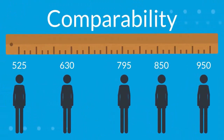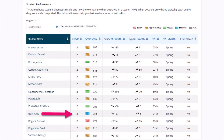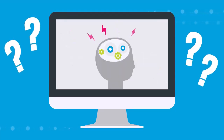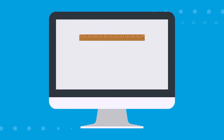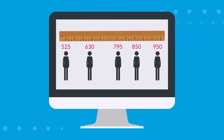Another huge benefit of using scale scores is comparability. Let's compare that student's score to the whole class or grade level. When we look at all students' scores in this class, we see that Amy scored a 755 on her spring math assessment, but most of her peers scored in the low 600s and 700s. That means that Amy is more advanced in math compared to her peers. Now you understand the power of scale scores — by taking into account the difficulty of the questions a student answered, scale scores allow educators to measure growth and to compare students to one another, even students in different grades, by using the same yardstick for everyone.